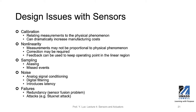Also, non-linearity — some of the models we assume, for example the accelerometer model, we assume the strain property and the damper property are all constant. That might not be true in certain situations, so correction might be required. To address those problems, digital feedback can be used to keep the operating point in the linear region.